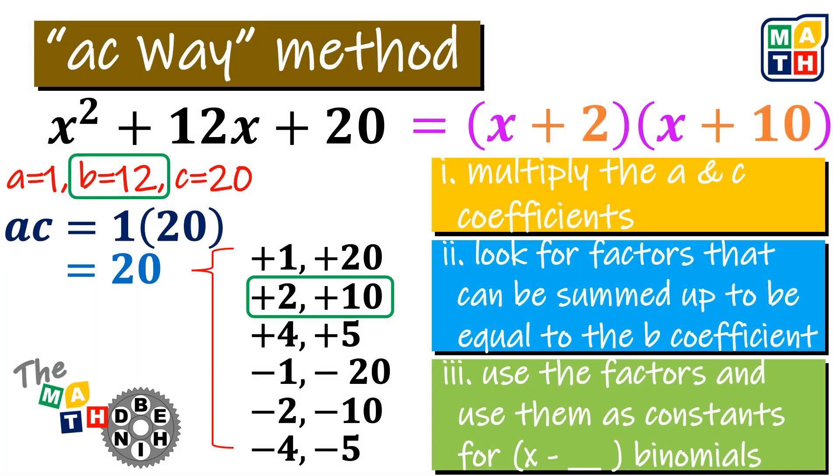In short, x squared plus 12x plus 20 is a product of (x plus 2) and (x plus 10).